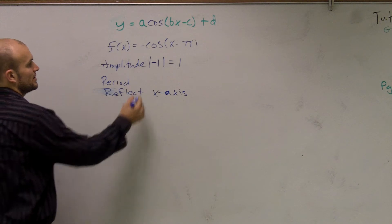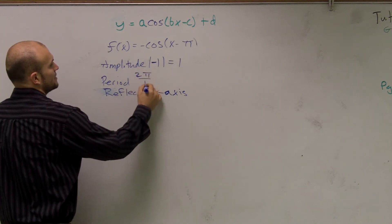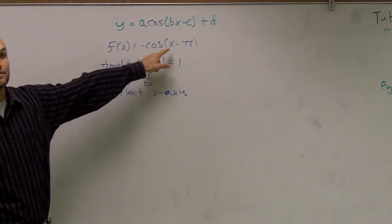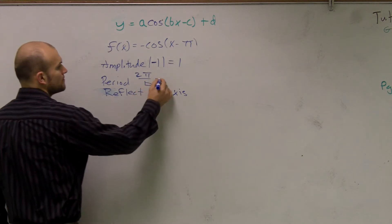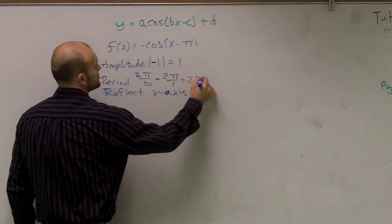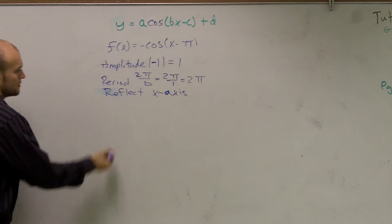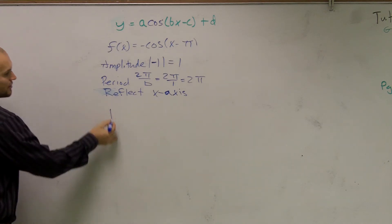And then we need to figure out the period, which is 2π divided by b. What number is in front of my x? That's 1. 2π over 1 equals 2π. So let's go ahead and get a graph here.